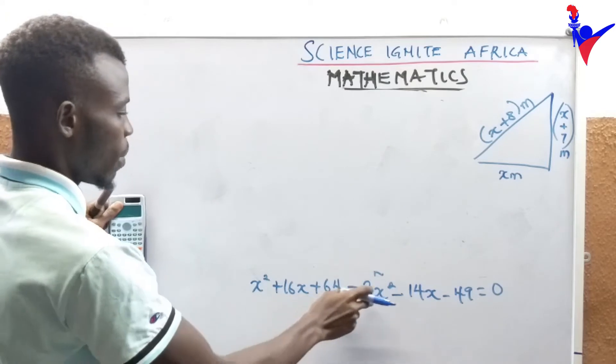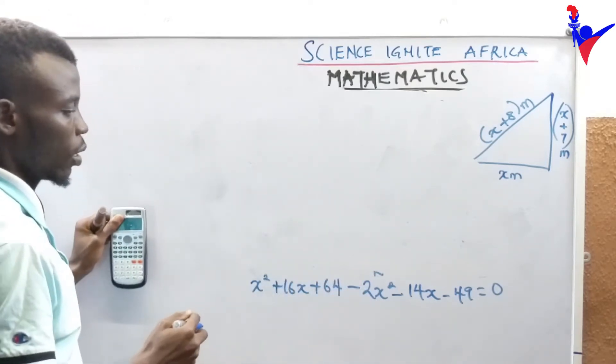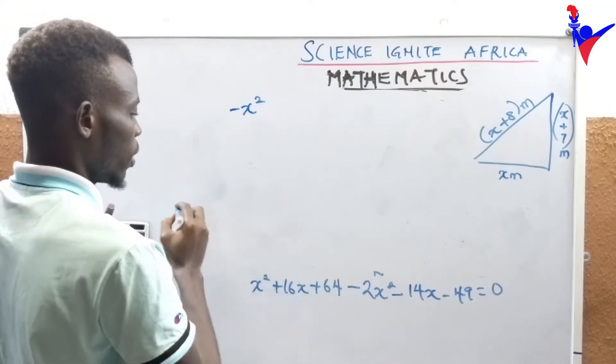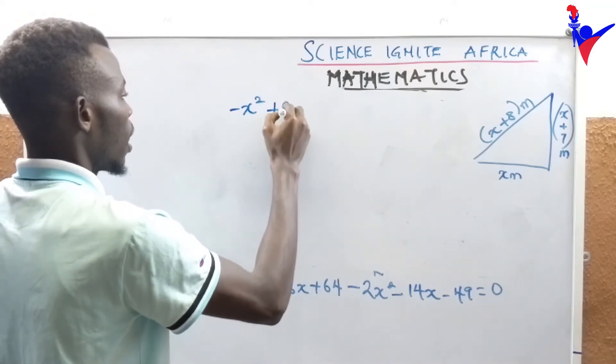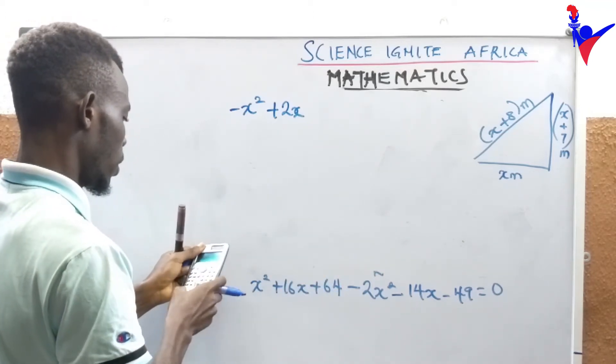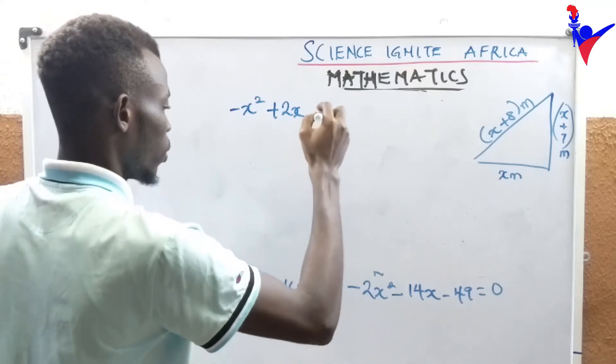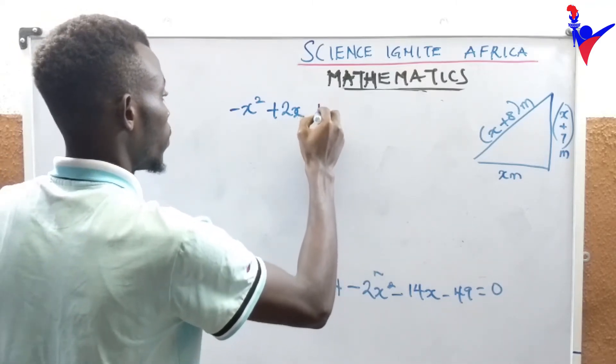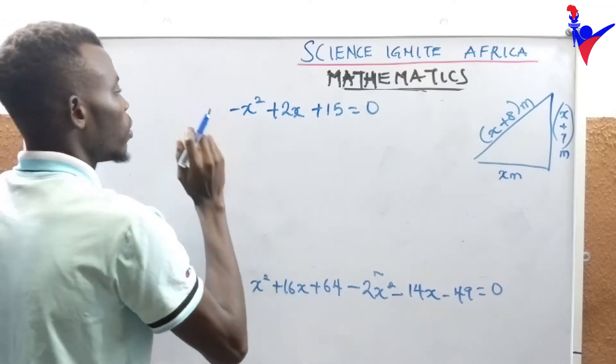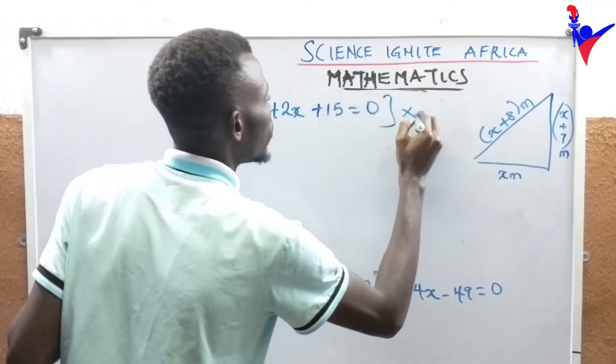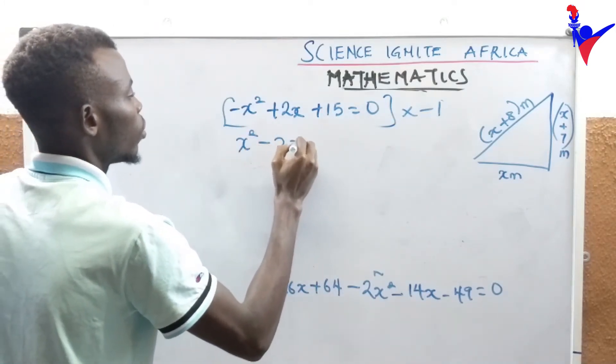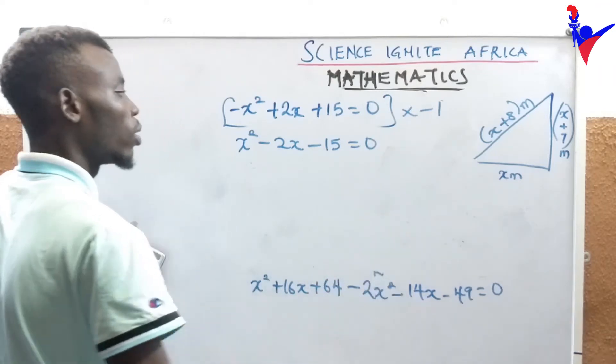So x squared minus 2x squared, that will be minus x squared. 16x minus 14x, that will be plus 2x. 64 minus 49, we have 15. I can multiply by minus 1 and we have x squared minus 2x minus 15 equals 0.